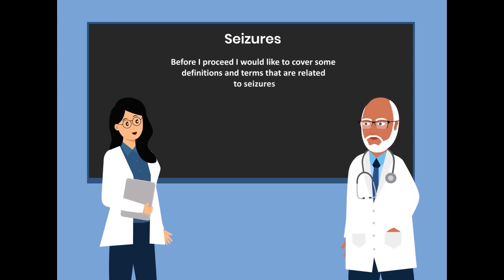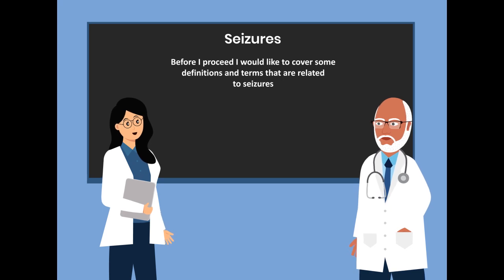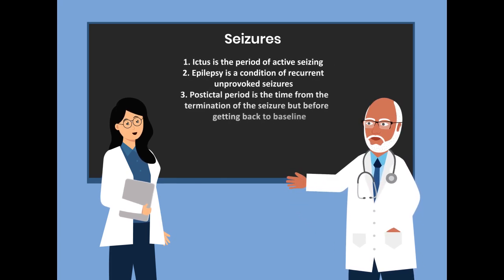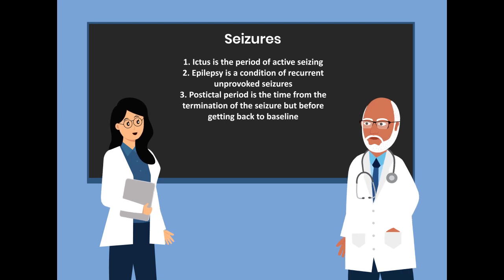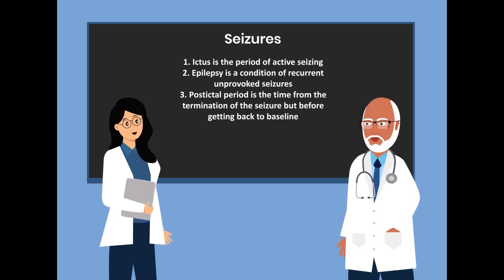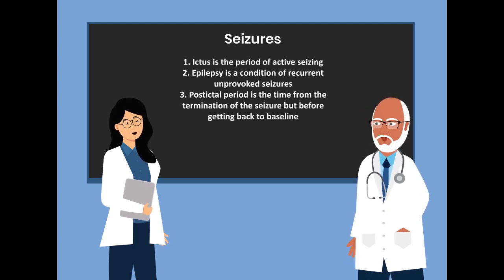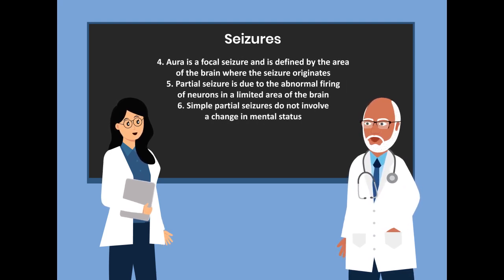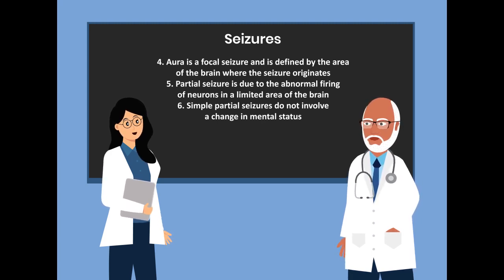Before I proceed, I would like to cover some definitions and terms related to seizures. The first is ictus — the period of active seizure. The second is epilepsy — a condition of recurrent, unprovoked seizures. The third is post-ictal — the time from the termination of the seizure but before getting back to baseline. The fourth is aura — a focal seizure defined by the area of the brain where the seizure originates.